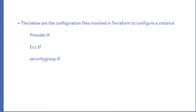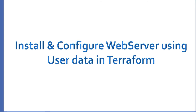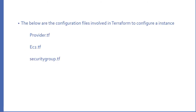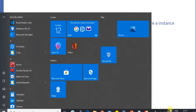So what files do we need? To create an instance we need a provider.tf and an ec2.tf, which we have discussed already. Apart from that, we need a file called security group. I'll show you what is there in the security group.